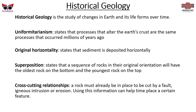Let's begin with historical geology. This is the study of changes in Earth and its life forms over time. This comes into several different parts that fall into historical geology. First is uniformitarianism, which states that the processes that alter the Earth's crust are the same processes that occurred millions of years ago — that the way the Earth runs now is basically how the Earth ran before.